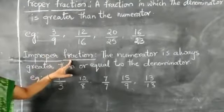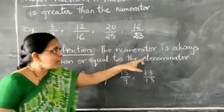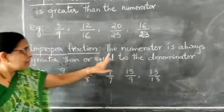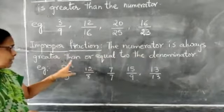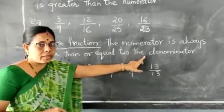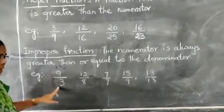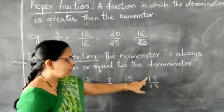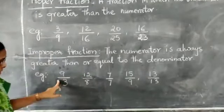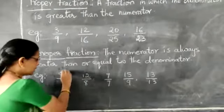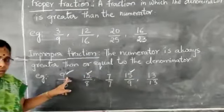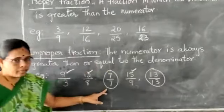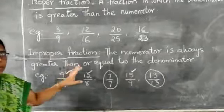Now improper fraction. In an improper fraction, the numerator is always greater than or equal to the denominator. For example: 9/3, 12/8, 7/7, 15/9, 13/5. In these, the numerator is always greater than or equal to the denominator. Such type of fractions are called improper fractions.